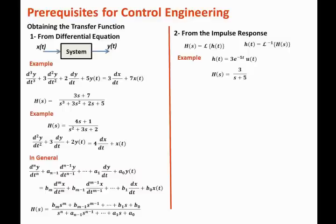We can also evaluate the impulse response from the transfer function. If h of s equals 2 over s plus 1 over s plus 2, take the inverse Laplace transform. The inverse of 2 over s becomes 2 times u of t (the unit step function), and the inverse of 1 over s plus 2 is e to the minus 2t times u of t.